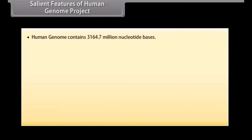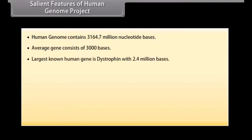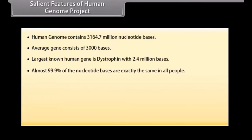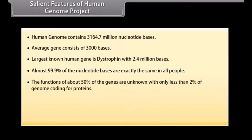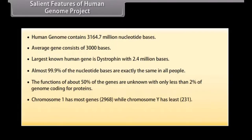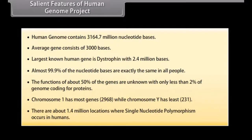Salient features of the Human Genome Project: The human genome contains 3,164.7 million nucleotide bases, averaging 3,000 bases. The largest known human gene is dystrophin with 2.4 million bases. Almost 99.9% of nucleotide bases are exactly the same in all people. The functions of about 50% of genes are unknown, with only less than 2% of the genome coding for proteins. Chromosome 1 has the most genes (2,968) while Chromosome Y has the least (231). There are about 1.4 million locations where single nucleotide polymorphism occurs in humans.